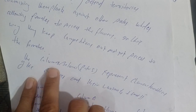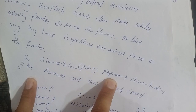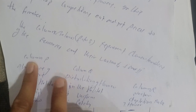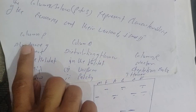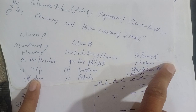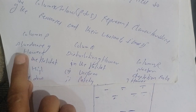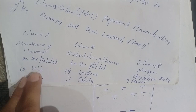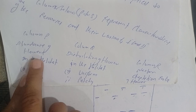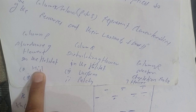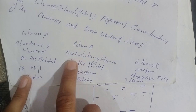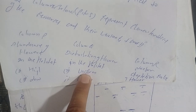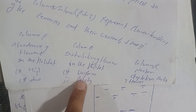The question involves a table with columns P, Q, R, and S — there are 4 columns. The first column relates to the abundance of flowers in the habitat, whether it is high or low. The second column relates to the distribution of flowers in the habitat, whether it is uniform or not. These characteristics represent the varied properties of resources in the habitat.